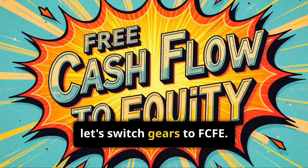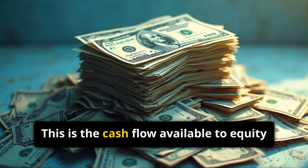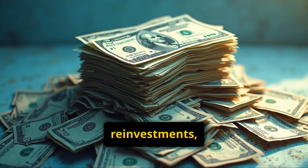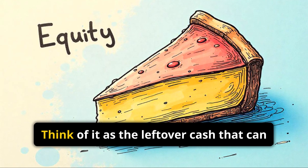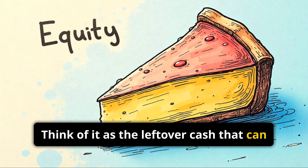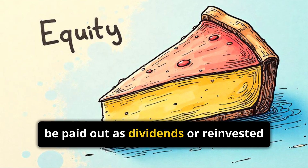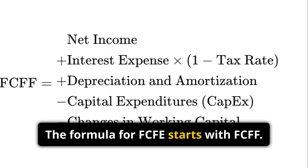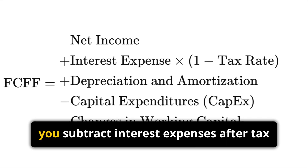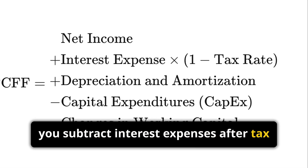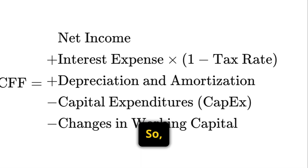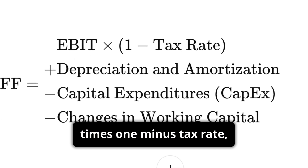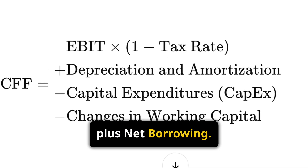Now, let's switch gears to FCFE. This is the cash flow available to equity shareholders after all expenses, reinvestments, and debt repayments. Think of it as the leftover cash that can be paid out as dividends or reinvested into the company. The formula for FCFE starts with FCFF. Then you subtract interest expenses after tax and add net borrowing. So, FCFE equals FCFF minus interest expenses times (1 minus tax rate) plus net borrowing.